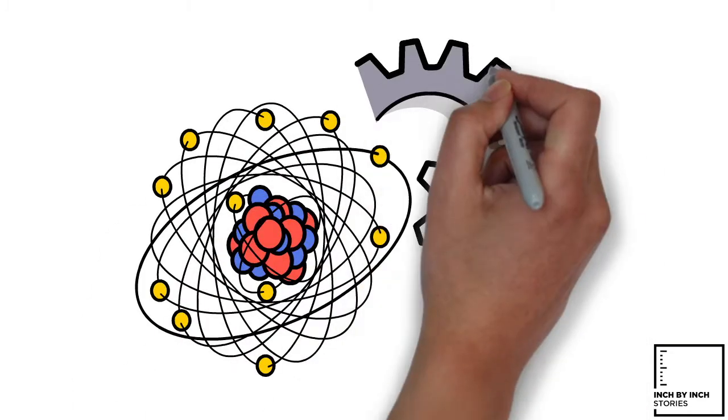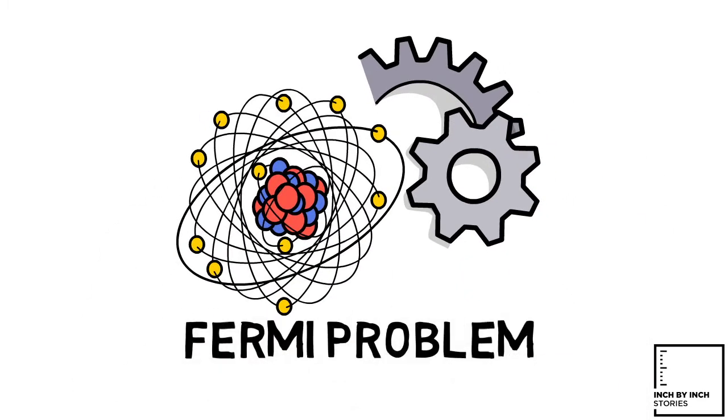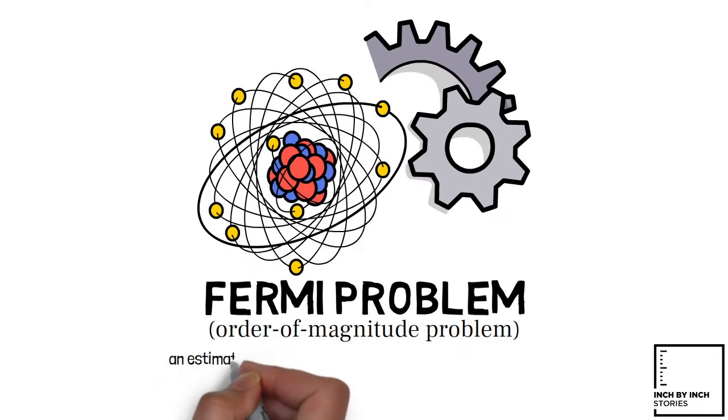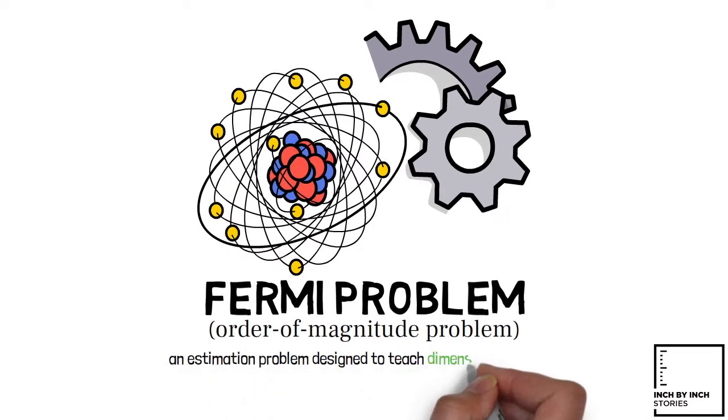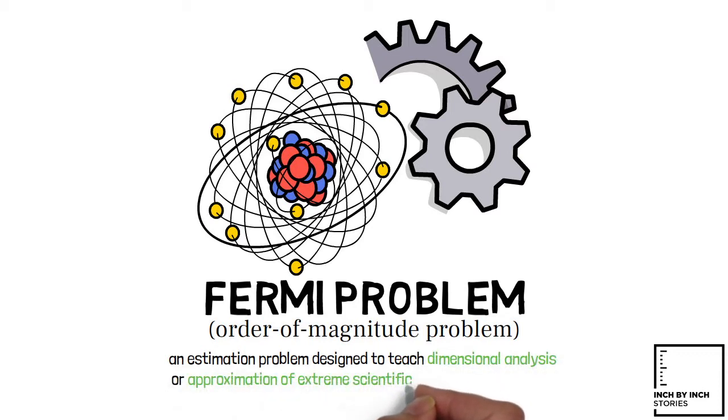In physics or engineering education, a Fermi problem or order of magnitude problem is an estimation problem designed to teach dimensional analysis or approximation of extreme scientific calculations, and such a problem is usually a back-of-the-envelope calculation.